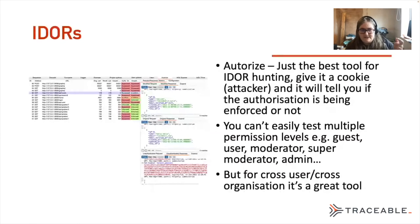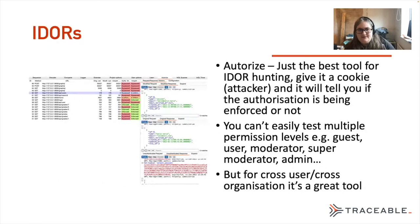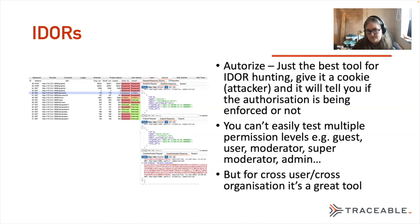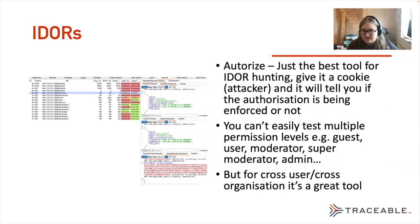The best tool for hunting for IDORs is a tool called Autorize. It's really horrible UI design and very hard to use, but it's by far the best tool. If you give it a cookie that's your attacker, it will go through as you explore an API and automatically tell you whether authorization is being enforced. You can't necessarily test multiple permission levels — so if you're looking for broken function level authorization with guest, user, moderator, super moderator, and admin, you can't do that with two accounts. But you can do cross-organization and cross-user testing. If you've got an application broken into organizations, you can test if a user from one organization can access another organization's resources. It has a nice 'bypassed / enforced' indicator. The actual UI is horrible, but it's a good tool.